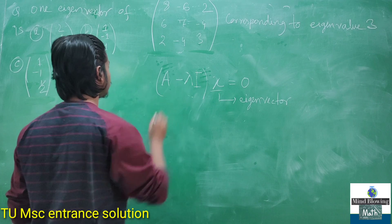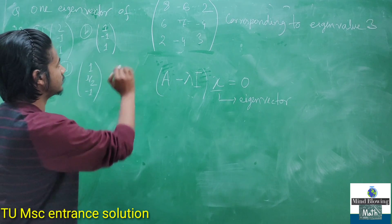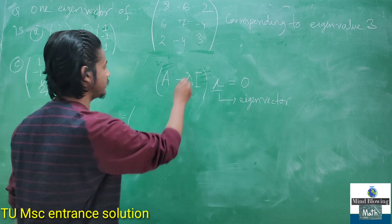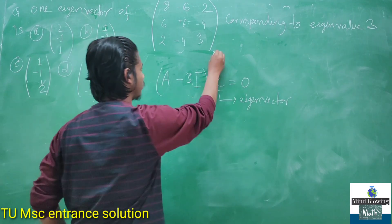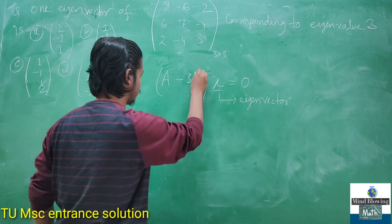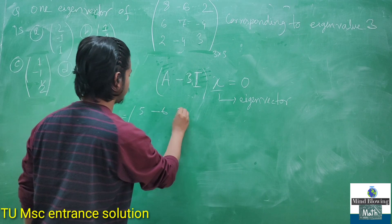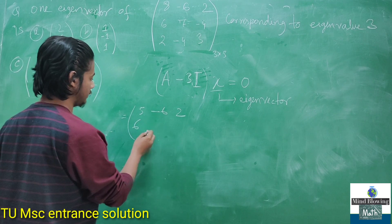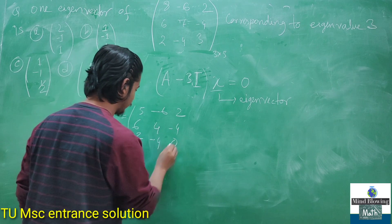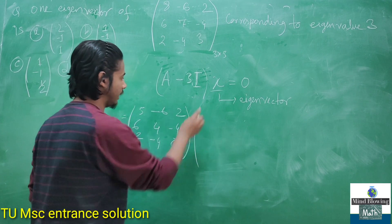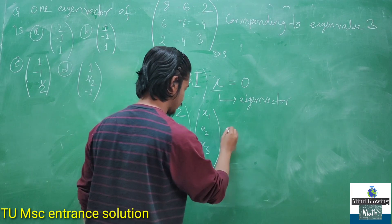Matrix A is given as: [8, -6, 2; 6, 7, -4; 2, -4, 3] and λ = 3. So we compute A - 3I, which gives: [5, -6, 2; 6, 4, -4; 2, -4, 0] multiplied by the eigenvector [x1, x2, x3] equals 0.